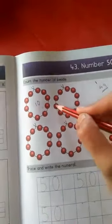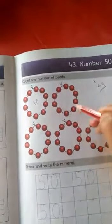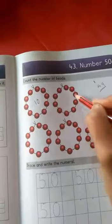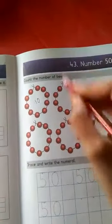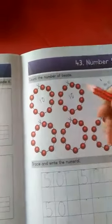Now count here. 1, 2, 3, 4, 5, 6, 7, 8, 9, 10. In this set, there are ten beads. Right here. Ten.